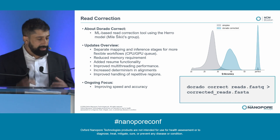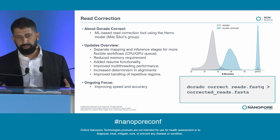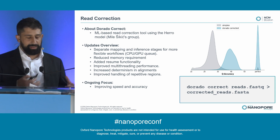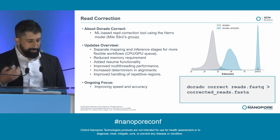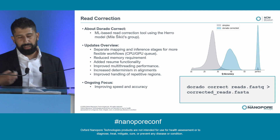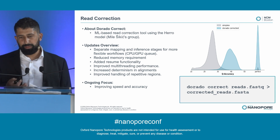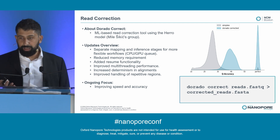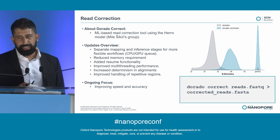On the read correction front, we were very excited to announce advancements at London Calling. DoradoCorrect is based on the HERRO tool, developed by Miquel Schikage's group in Singapore. We've separated mapping and inference stages for more flexible workflows — so if you have a cluster with CPU and GPU nodes, you can run mapping on CPU nodes and inference on GPU nodes. We've improved multi-threading performance, increased determinism in alignment, and improved handling of repetitive regions, which is very important — for example, in centromeres. Read correction is something we recommend exclusively for assembly. People ask about using it for variant calling or other tasks — you can try it, caveat emptor, but it's not tested and not what we recommend.